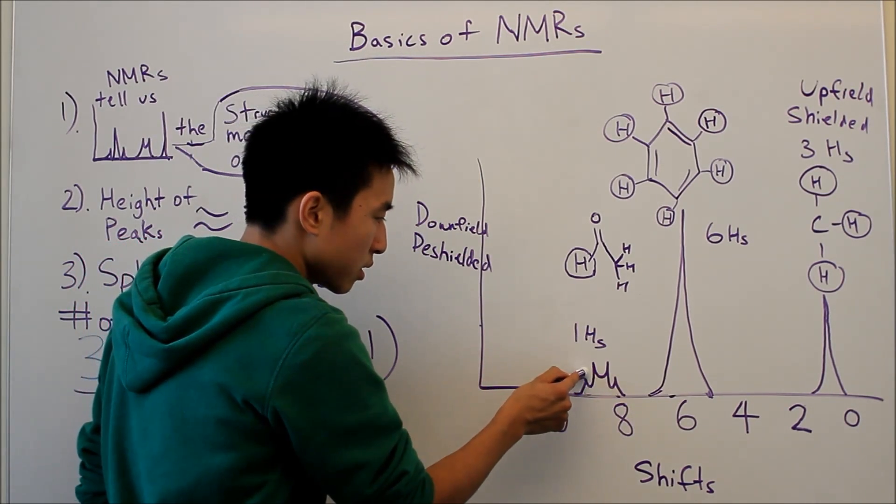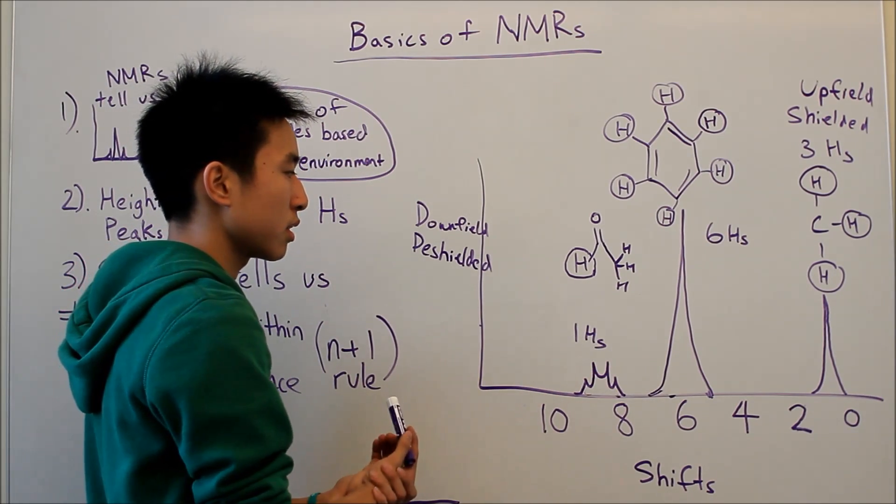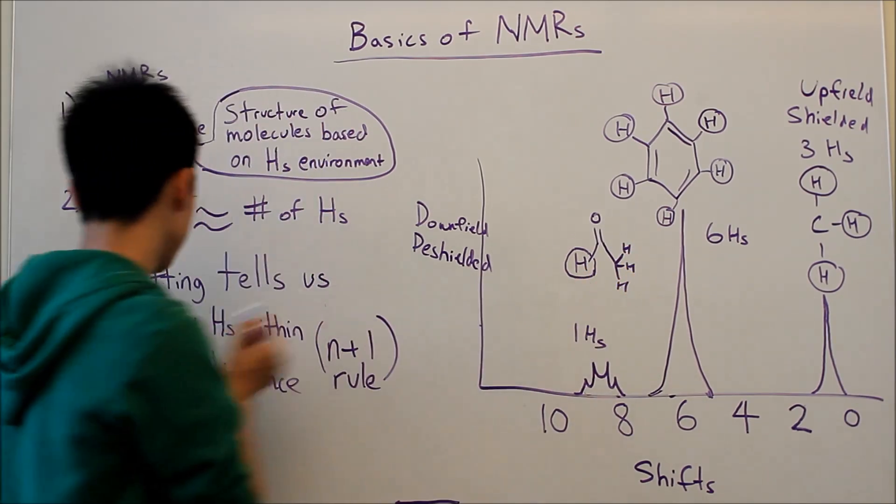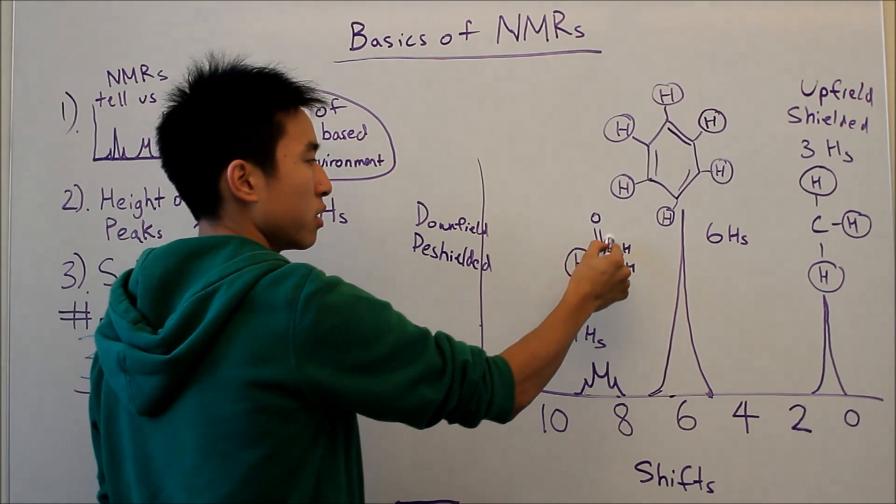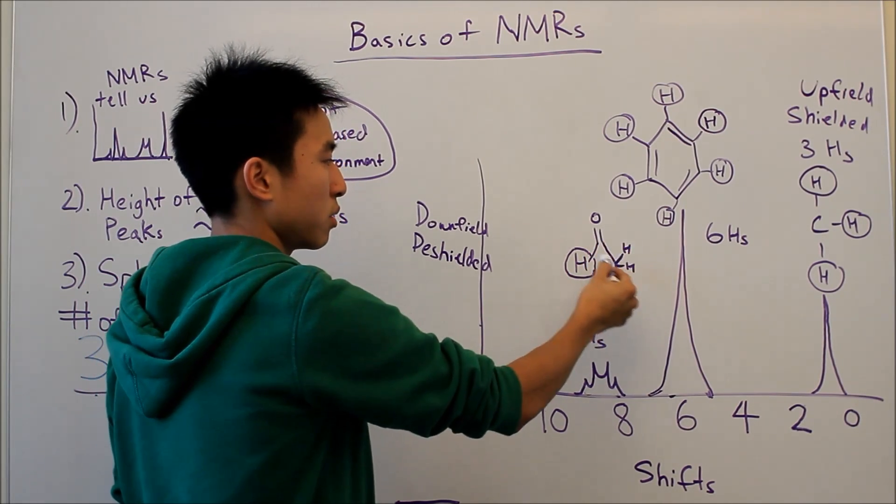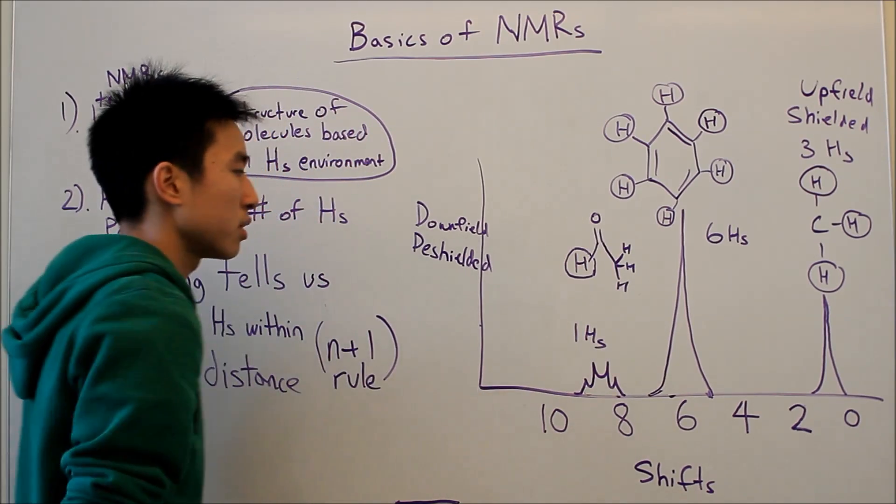There is one, two, three, four, so that's a quartet. And it makes sense because there are three unequivalent hydrogens within three-bond's distance to this guy, because it's one bond, two bond, three bonds, one bond, two bond, three bonds, one bond, two bond, three bonds.